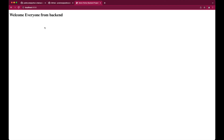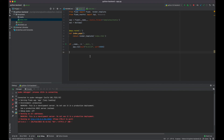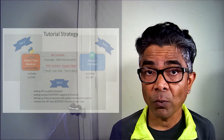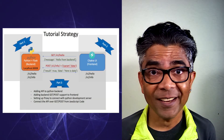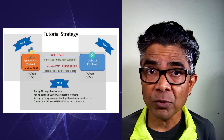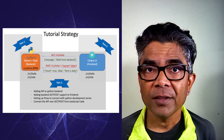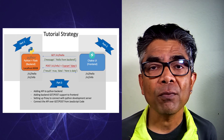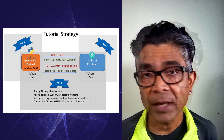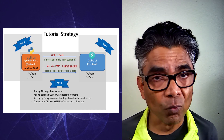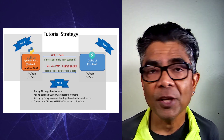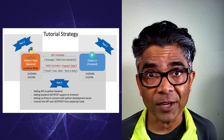At this point our level-one or bare minimum code related with the Python and Flask app is ready. Part one of this tutorial is done. In this tutorial we have covered the Python and Flask based backend. In the next tutorial we are going to work on the Chakra UI based frontend, so I will see you in that tutorial.